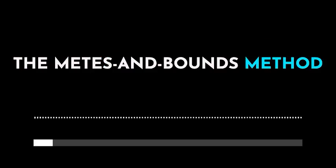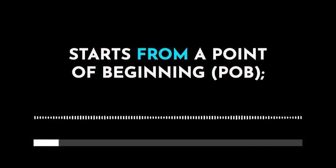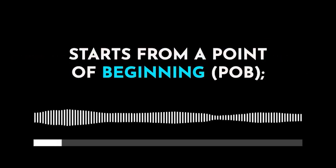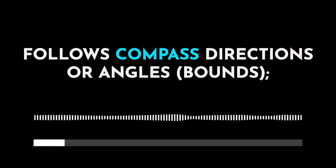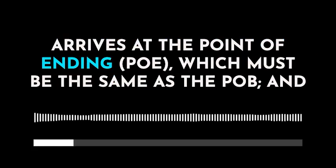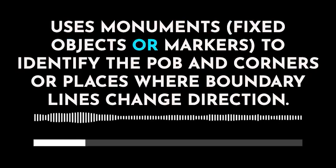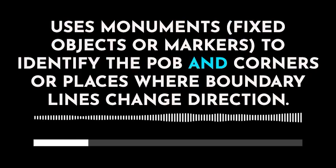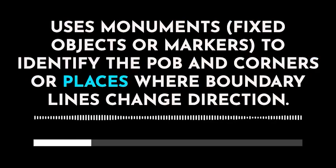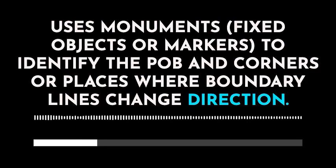The Metes and Bounds Method. It measures distances, starts from a point of beginning, follows compass directions or angles, arrives at the point of ending, which must be the same as the point of beginning, and uses monuments to identify the point of beginning and corners or places where boundary lines change direction.